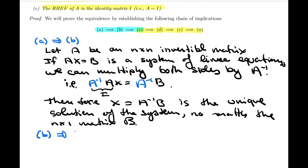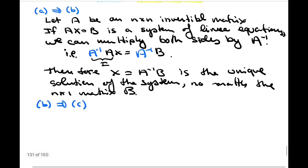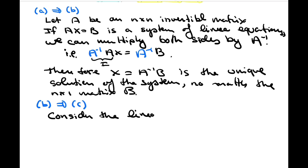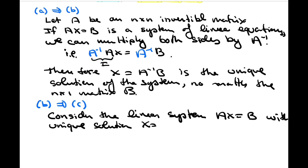This leads us to b implies c, and this statement is almost trivial — pun intended. Consider the linear system ax equals b with unique solution x equals a inverse times b, for any n by one matrix b. When we're writing a formal proof, we do have to restate the premise.